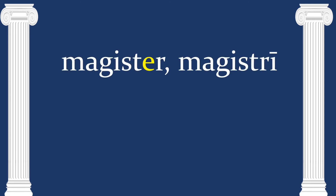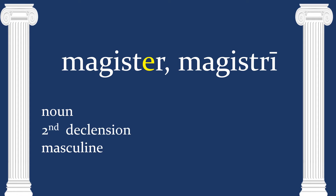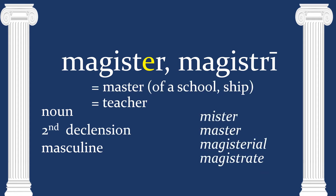Next we have a very familiar word: magister, magistri — another masculine noun, also second declension. It means master of a school, of a ship; it's also teacher. We get words like mister, master, magisterial, and magistrate. This is one of the second declension masculine nouns where the E disappears, like in ager/agri and cancer/cancri.